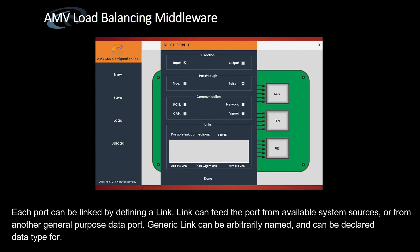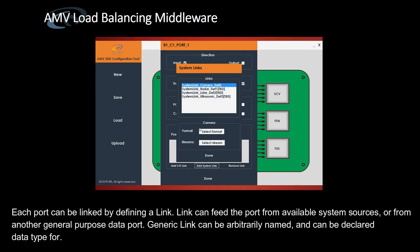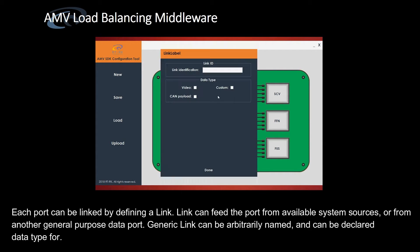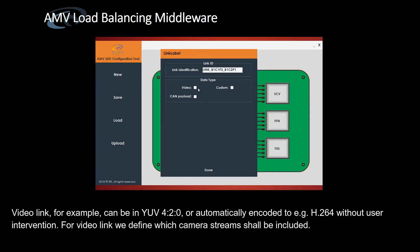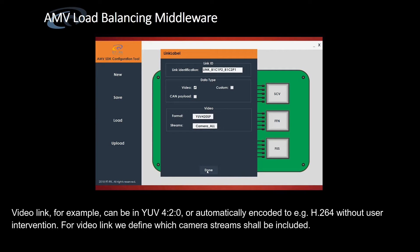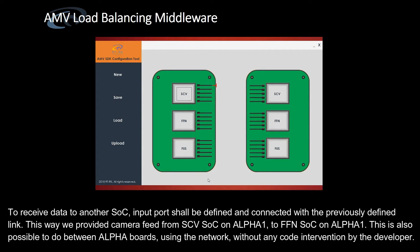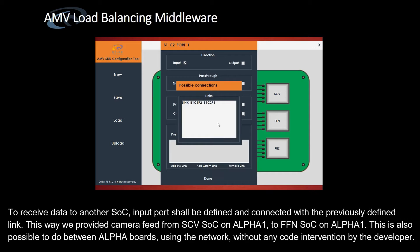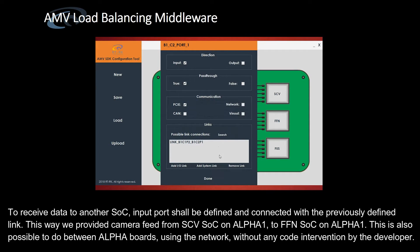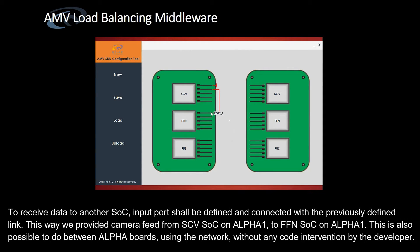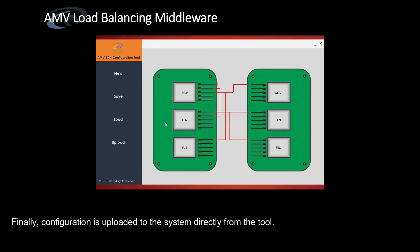Each port can be linked by defining a link. A link can feed a port from available system sources or from another general purpose data port. A generic link can be arbitrarily named and declared with a data type. A video link, for example, can be in YUV420 or automatically encoded to H.264 without user intervention. For a video link, we define which camera streams shall be included. To receive data on another SoC, an input port shall be defined and connected with the previously defined link. This way, we provided camera feed from the SCV SoC on Alpha 1 to the FFM SoC on Alpha 1 — also possible between Alpha boards using the network without any code intervention. Finally, the configuration is uploaded to the system directly from the tool.